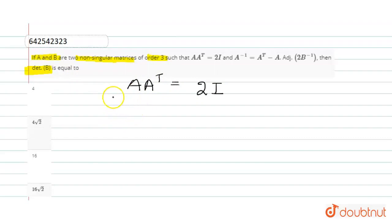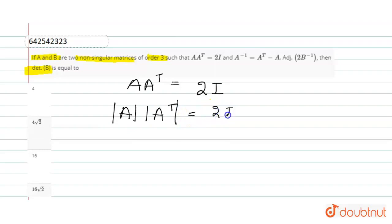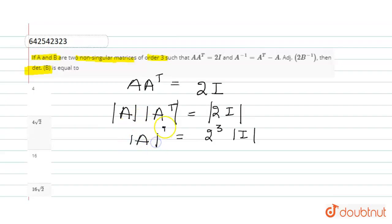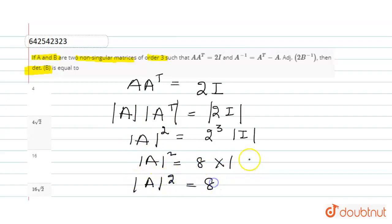So let's start this equation by taking the determinant on both sides. We get: determinant of A into determinant of A transpose equals determinant of 2I. Since the order of the matrices is 3, we take out 2 raised to the power 3 as common, and we are left with determinant of A squared equals 8 into 1. So the value of determinant of A squared equals 8.